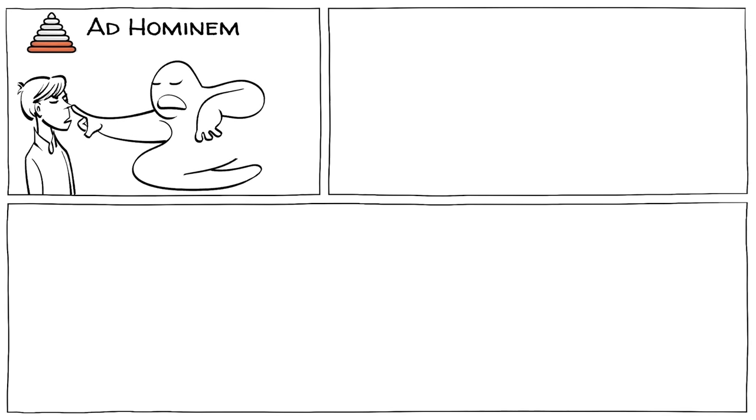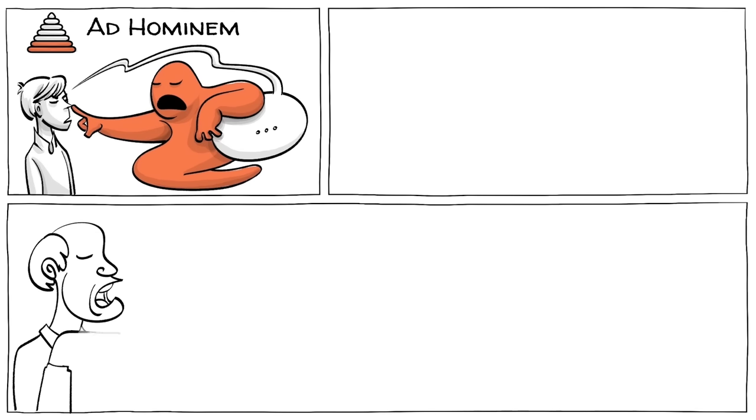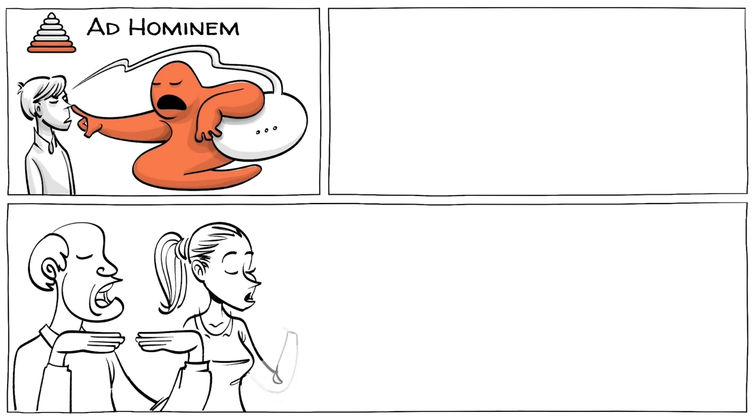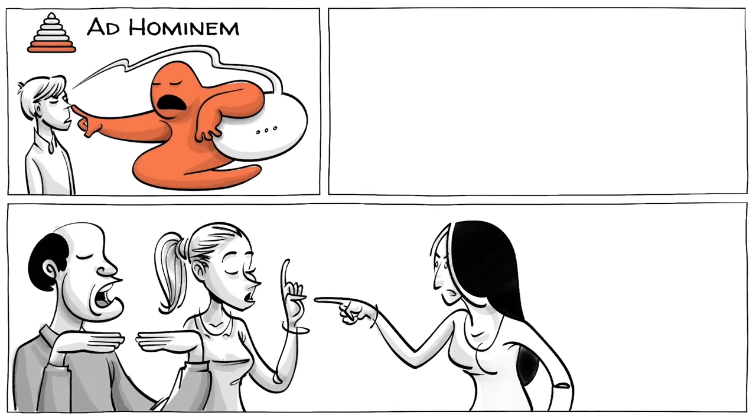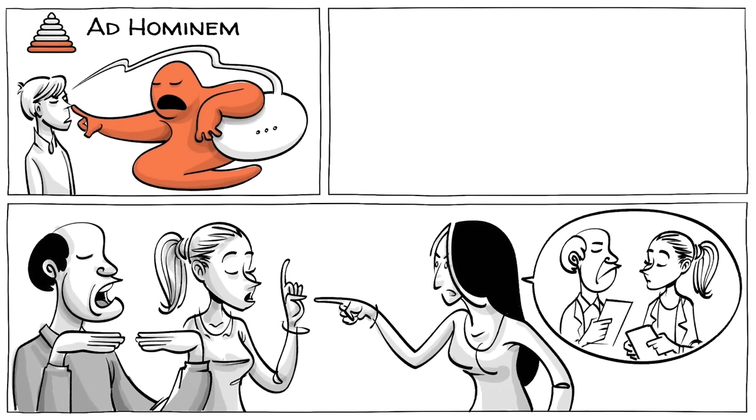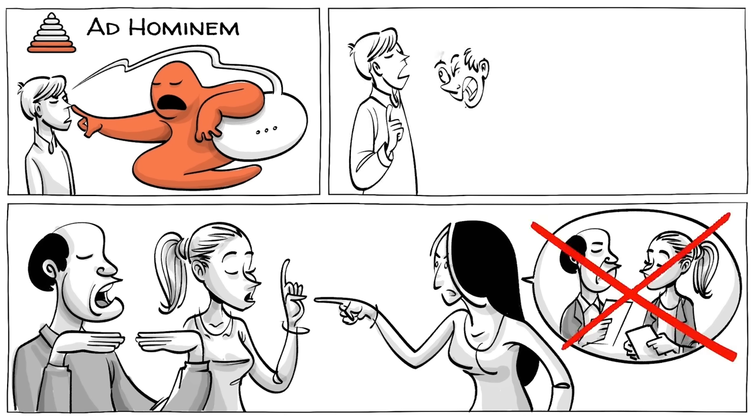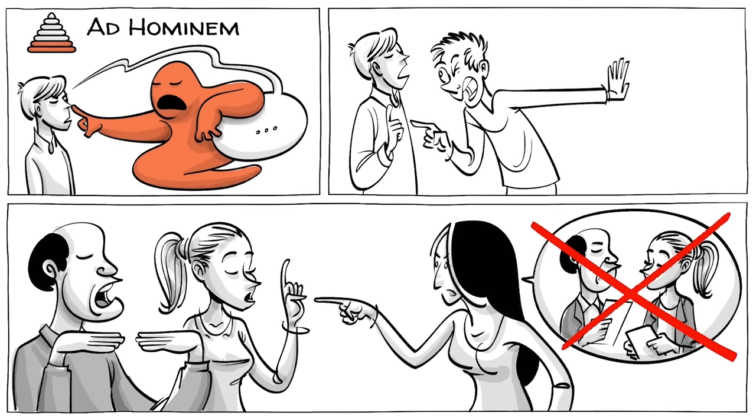Second is the ad hominem attack, which questions the authority of someone without addressing the argument. If they say, we are educators and the world ain't round, you can respond, you may be educators, but you certainly aren't scientists. Like name-calling, it's a weak form of disagreement, as it attacks them, but not what they say.